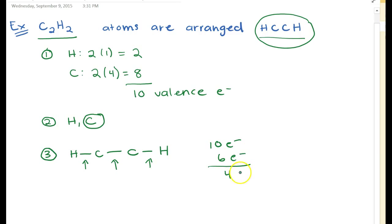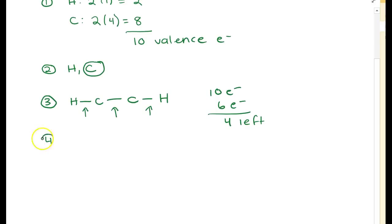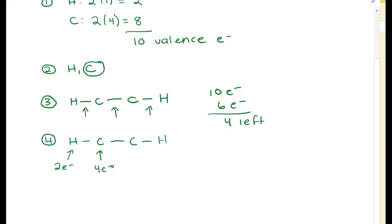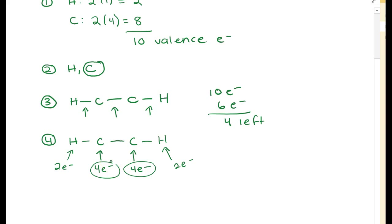We have four electrons left. The next thing is to figure out how many electrons are still needed. This hydrogen already has two electrons so it's perfectly happy. This carbon has two bonds touching it — one on the right and one on the left — giving it a total of four electrons, so it's not stable yet. The other carbon also has a total of four electrons. Both carbon atoms are still unhappy and not stable yet.